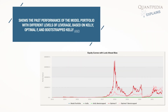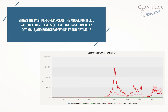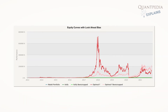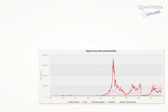The second chart shows the past performance of the model portfolio with different levels of leverage, based on Kelly, Optimal F, and bootstrapped Kelly and Optimal F. This chart contains look-ahead bias, as all of the leverage measures are calculated based on the whole history of past returns.